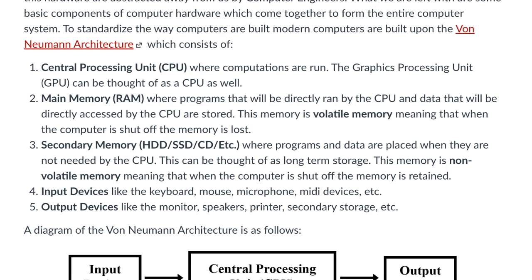Input and output devices round out the five main components. Input devices are going to be things like your keyboard, your mouse, your microphone, MIDI devices — any sort of device that can provide input to the computer. Output devices are going to be things like the monitor, speakers, a printer, or secondary storage — any sort of thing you can output to so the user can see that the computer has done something.